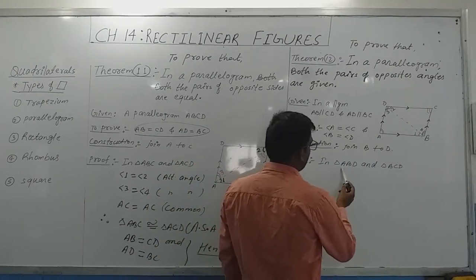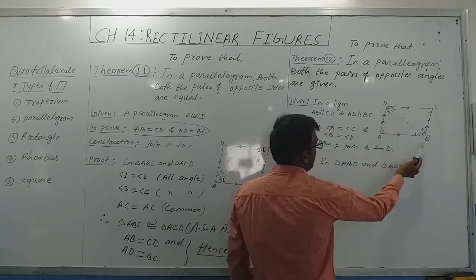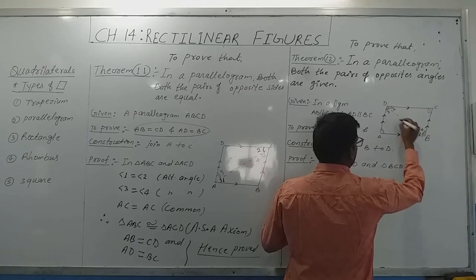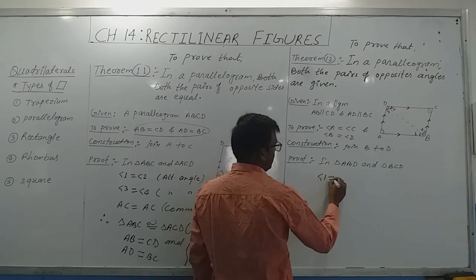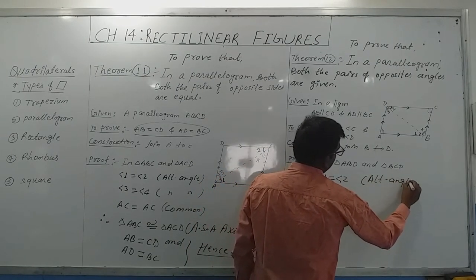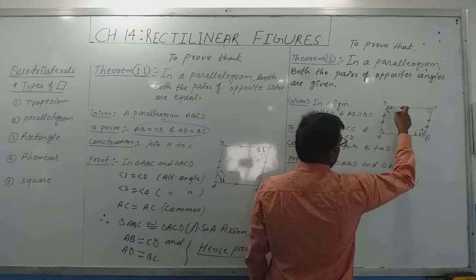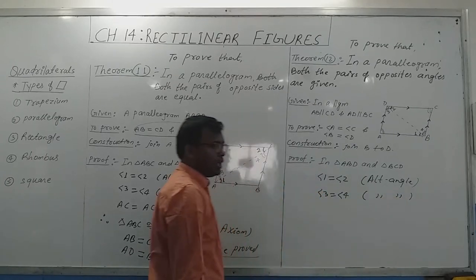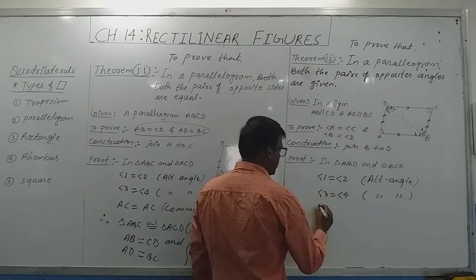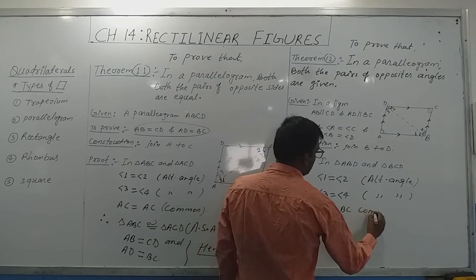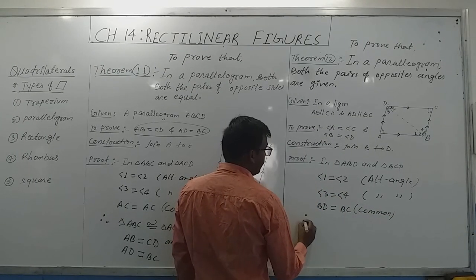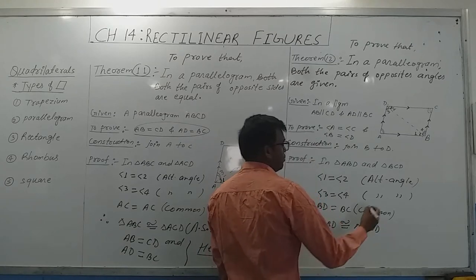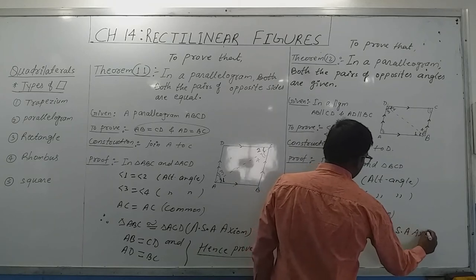Consider triangle ABD and triangle BCD. Angle 1 is equal to angle 2 — this is the alternate angle. Similarly, angle 3 is equal to angle 4 by the same condition. And BD equals BD, which is common. Therefore, triangle ABD is congruent to triangle BCD by the ASA property.